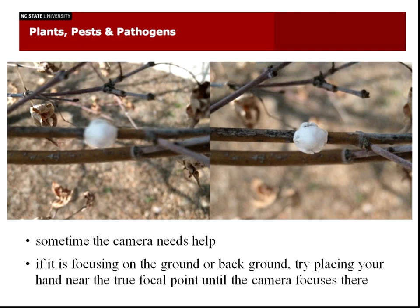Sometimes cameras need help in focusing. In this picture, the camera is focusing on the ground because it's a very large area and it wouldn't focus on the small twigs and the scale insect. One option is to put your hand close to the actual insect or organism, let it focus on your hand, and then pull your hand away while still holding the shutter button to focus, then hit the shutter release and take the photo. That's a good trick if you're having trouble focusing on the actual thing you want to photograph.